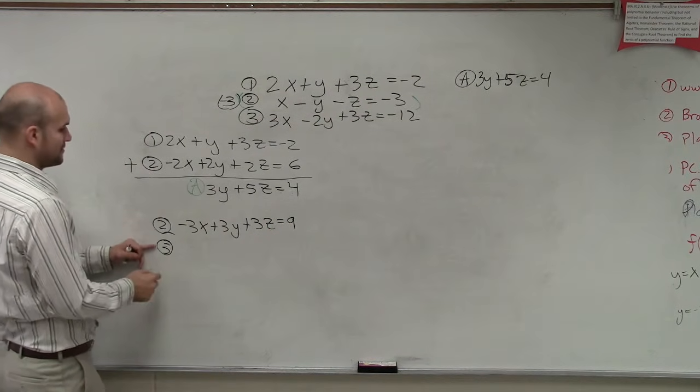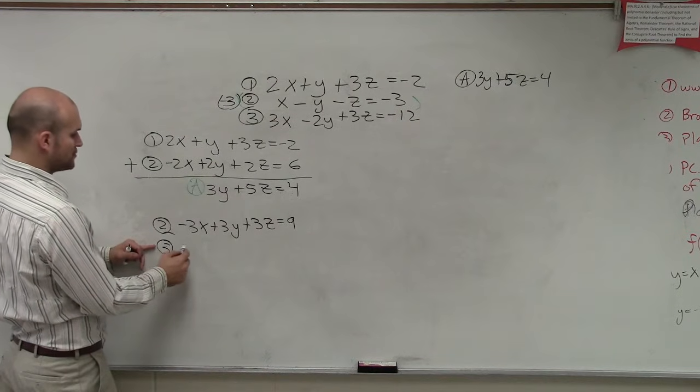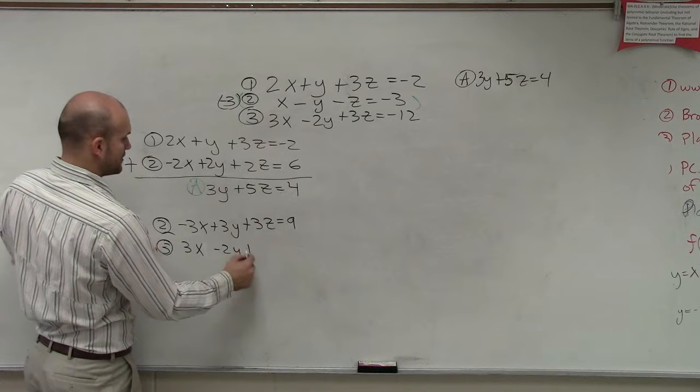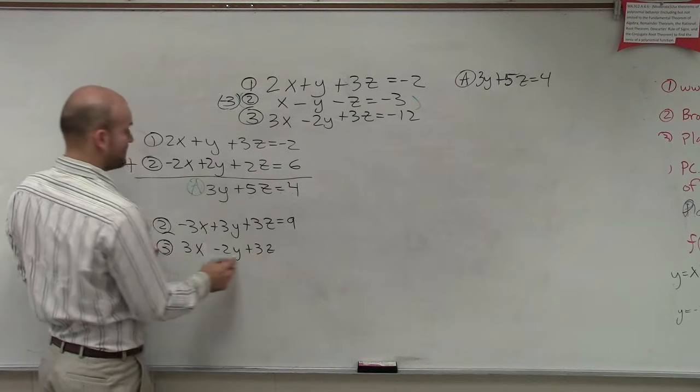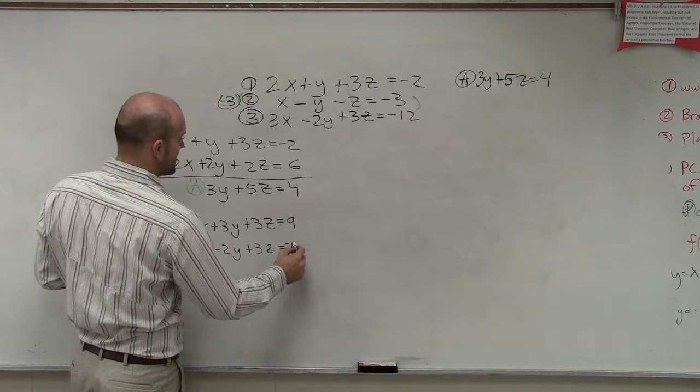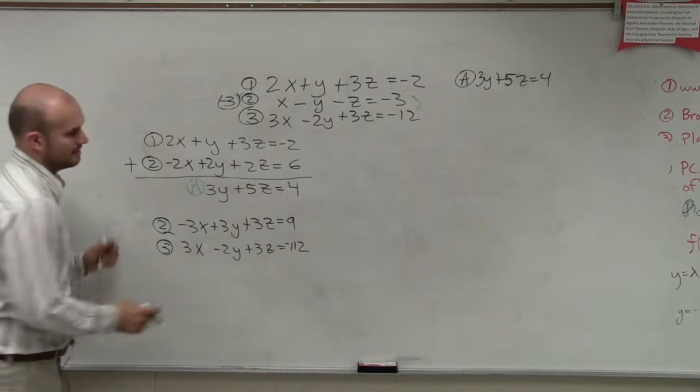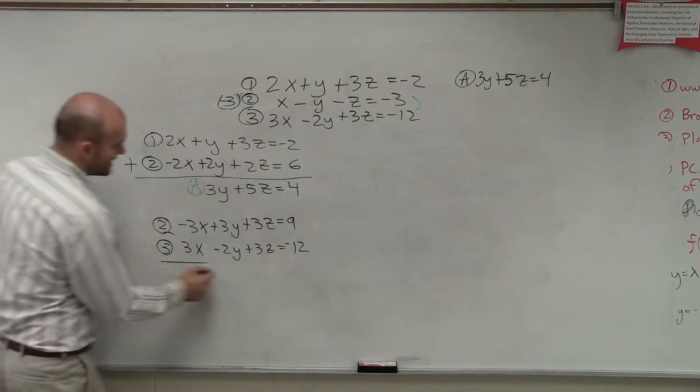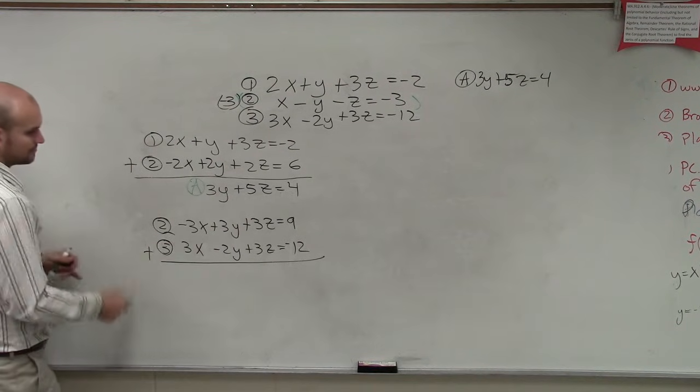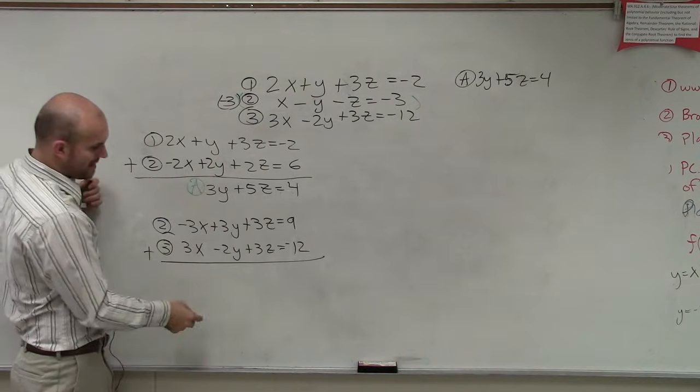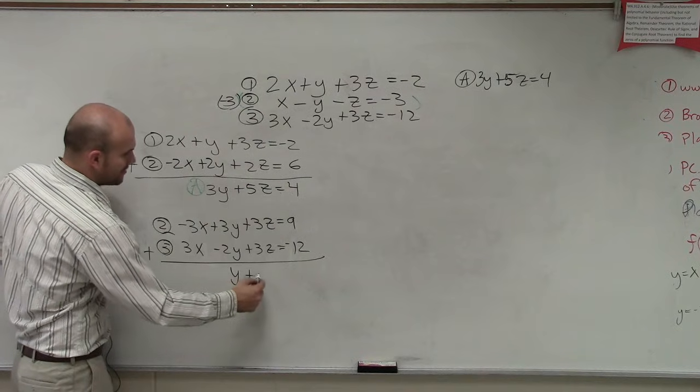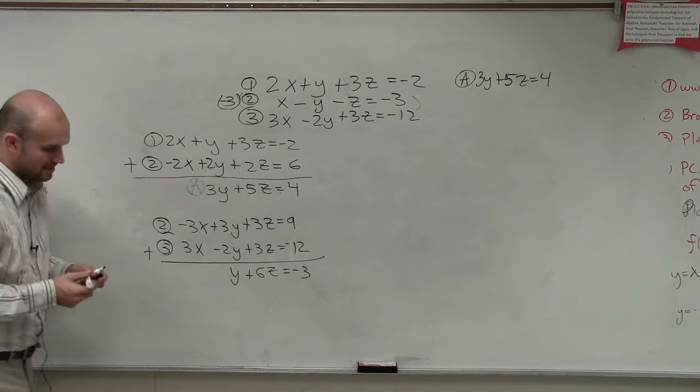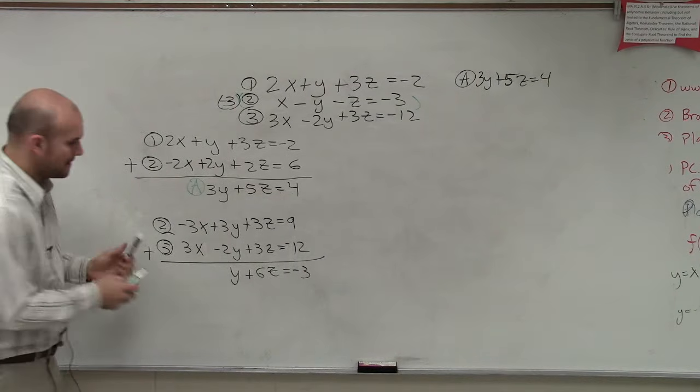And then I'm just going to rewrite equation three, which will be 3x minus 2y plus 3z equals negative 12. So now I add these up. And again, I eliminated my x's. I get y plus 6z equals negative 3. So I call that equation b.